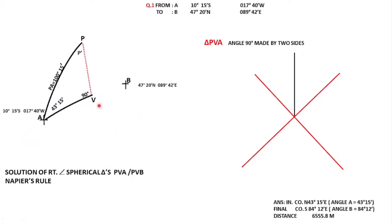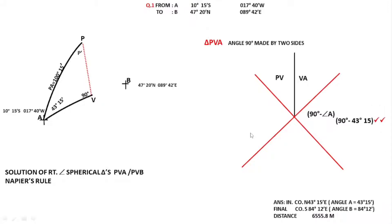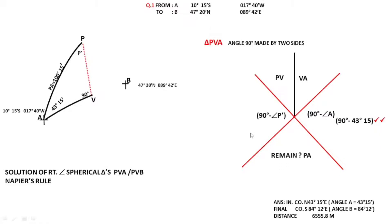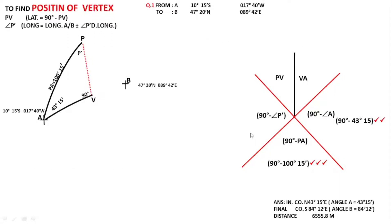Now, as I said, the 90-degree angle is made by two sides, so you start off by writing those two sides — PV and VA. On these two sides you write down what is opposite them: opposite PV you write 90 minus, and opposite VA you also write 90 minus. So 90 minus PVA gives angle A. I have written down 90 minus angle A. The remaining side is PA — I know PA and substitute the value there. These are the two unknowns, marked as question marks.